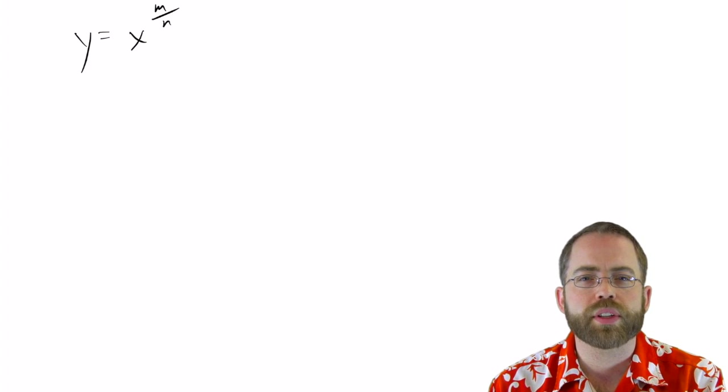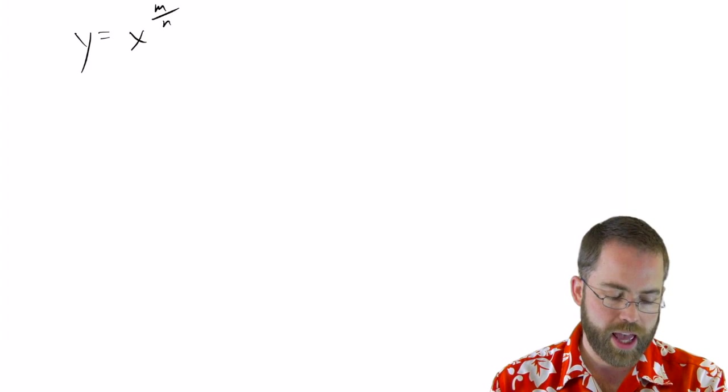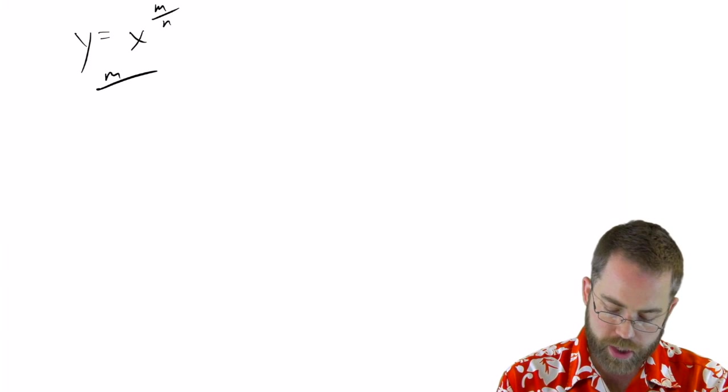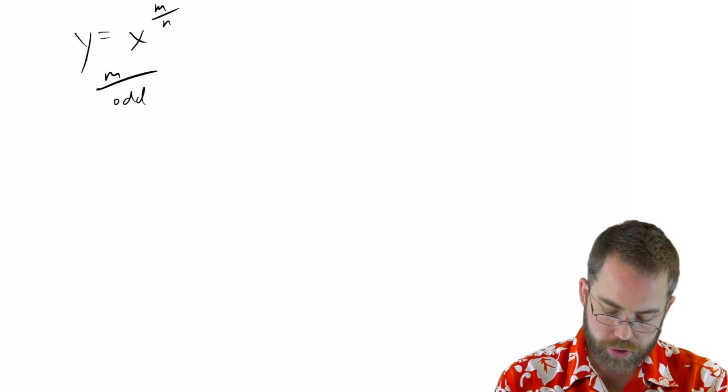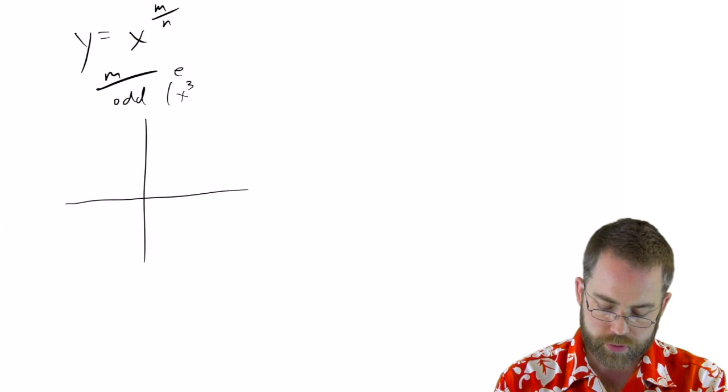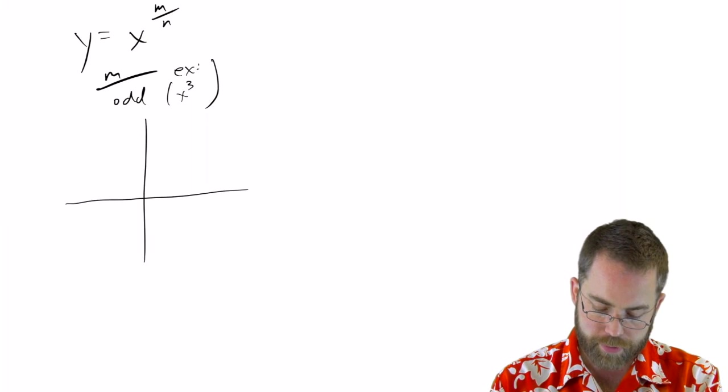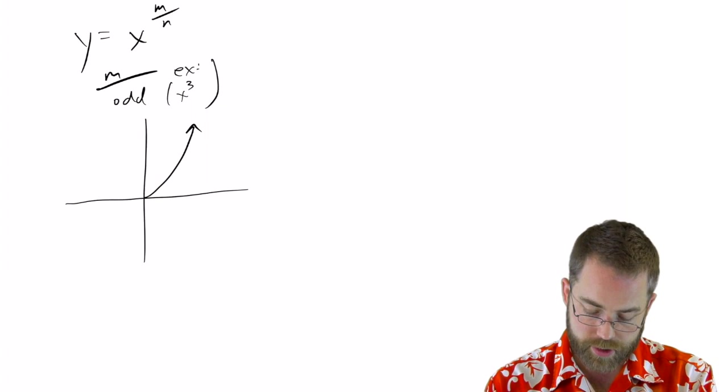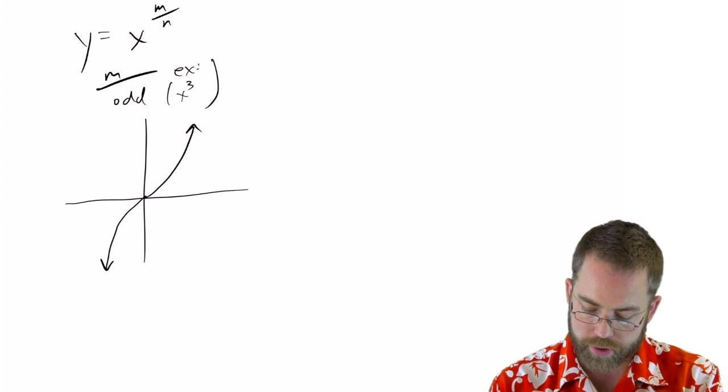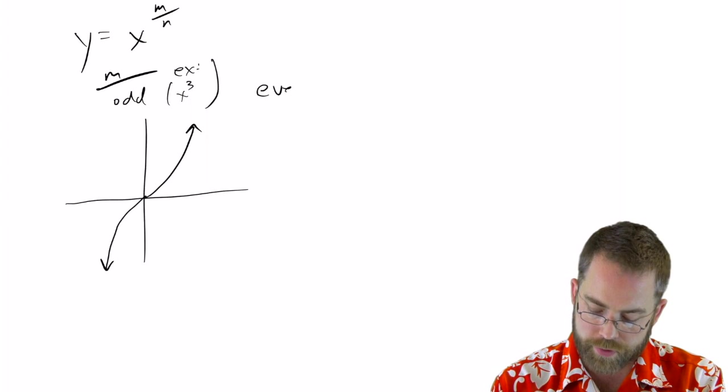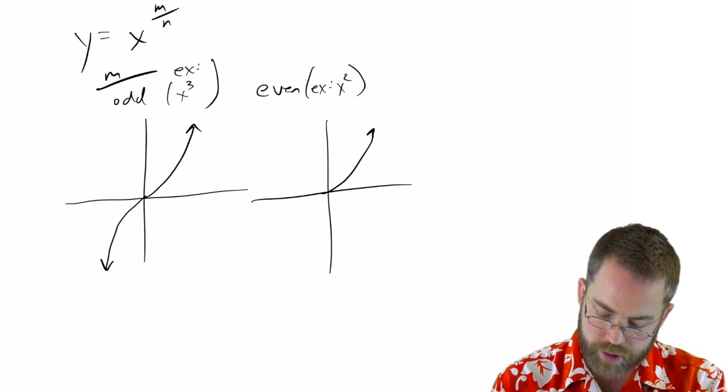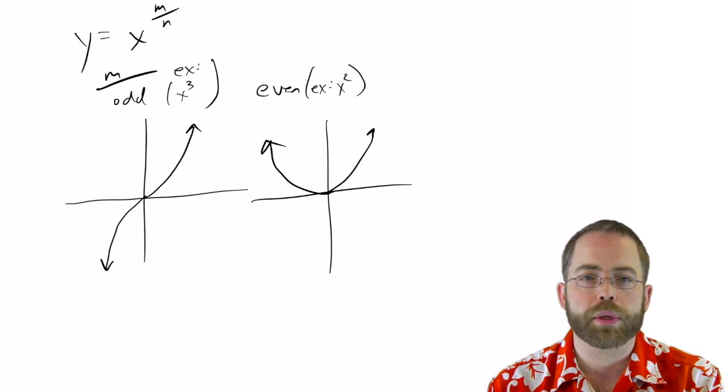Now we need to get into the full meal deal—rational exponents. So y equals x to the m, f of x equals x to the m over n. And so the first thing to consider is what about m, and what happens when it's odd? Well you know these, these are all things that we've done before. You've done x cubed, for example. So when x is cubed, that means that you go up to the right and down to the left and everything is possible. Versus when m is even, for example x squared, then even if you try to go to the negative side, you still end up getting forced to be positive.